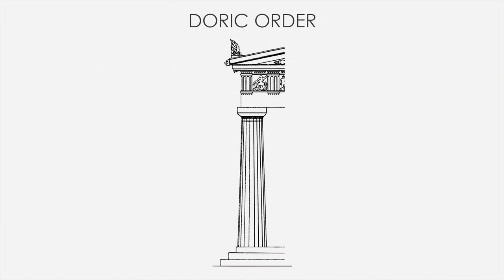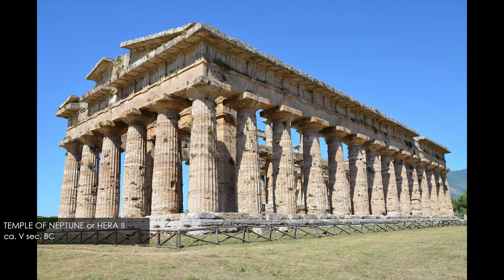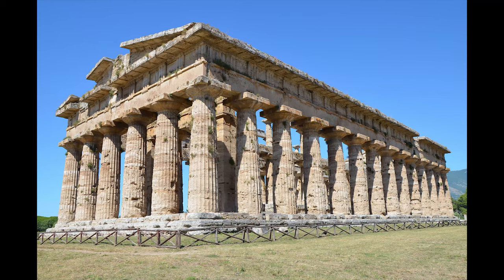Let's start with the oldest — the Doric order. It started to be used around 750 BC in mainland Greece, but we can find beautiful examples also in Magna Grecia, Southern Italy, like this Temple of Neptune, or Hera II.